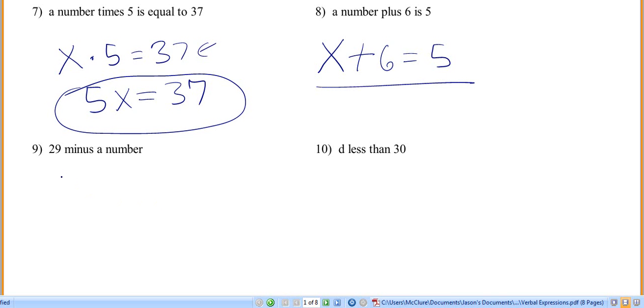Then you've got 29 minus a number. So remember, I said whatever goes here goes first when you write it as your math problem. A number is 29 minus a number. Well, I said that wrong, didn't I?